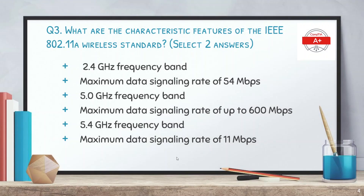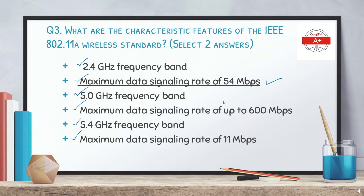Question 3: What are the characteristic features of the IEEE 802.11a wireless standard — select 2 answers. The options are: 2.4 GHz frequency band, maximum data signaling rate of 54 Mbps, 5.0 GHz frequency band, maximum data signaling rate of up to 600 Mbps, 5.4 GHz frequency band, and maximum data signaling rate of 11 Mbps. The correct answers are: maximum data signaling rate of 54 Mbps and the 5.0 GHz frequency band.